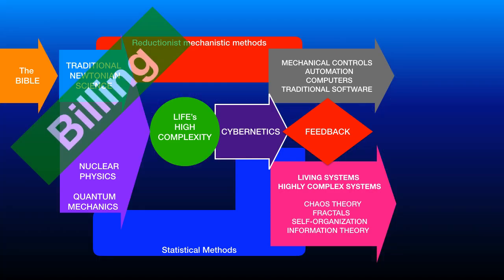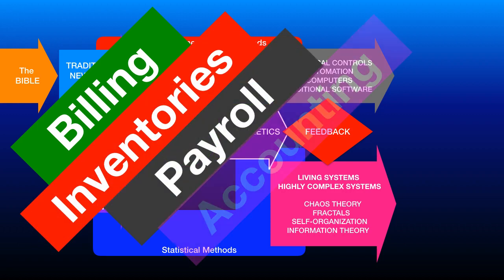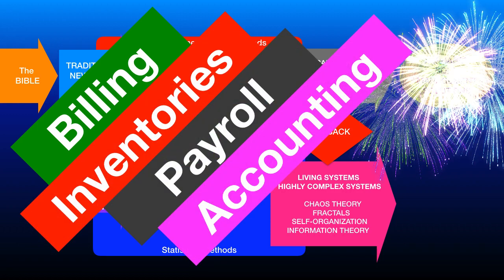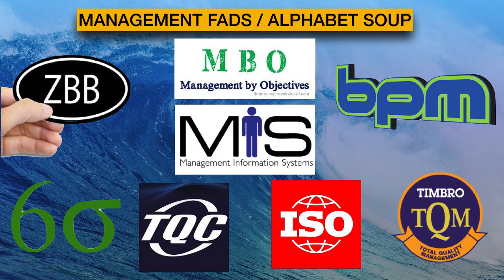Traditional and reductionist software generated the alphabet soup — a sea of reductionist management solutions, such as TQC, TQM, Six Sigma, ERPs, BPMs, BSC, etc. All of them now belong to the complicated systems domain, according to Dave Snowden.